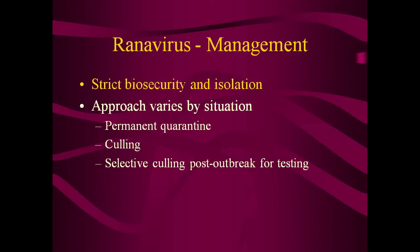As there is no treatment and the outbreaks can be very harmful to captive collections, biosecurity and isolation is important, particularly during an outbreak. Standard quarantine procedures and appropriate hygiene can help minimize the impacts of this disease. Please see the biosecurity module for further discussion of this topic. During an outbreak, the approach will vary by the situation. Highly valuable specimens may enter a permanent quarantine situation. Culling affected animals may be appropriate. Selective culling to test for the virus after an outbreak appears to have run its course may also be a means for deciding if it is safe to move animals and continue with the planned program.